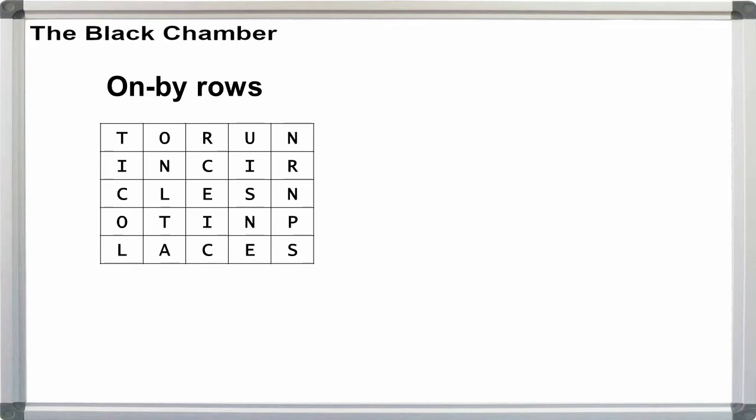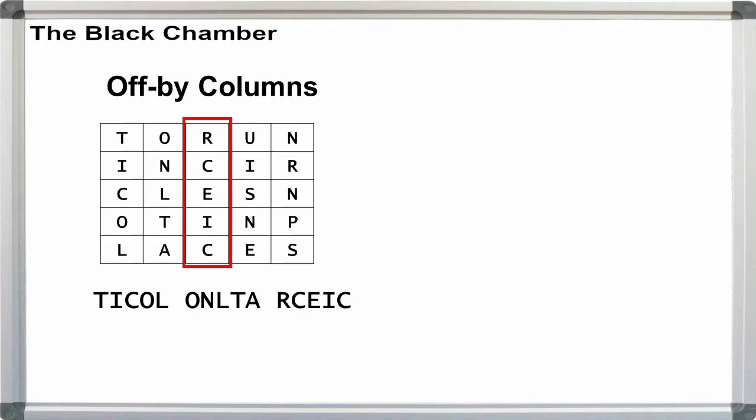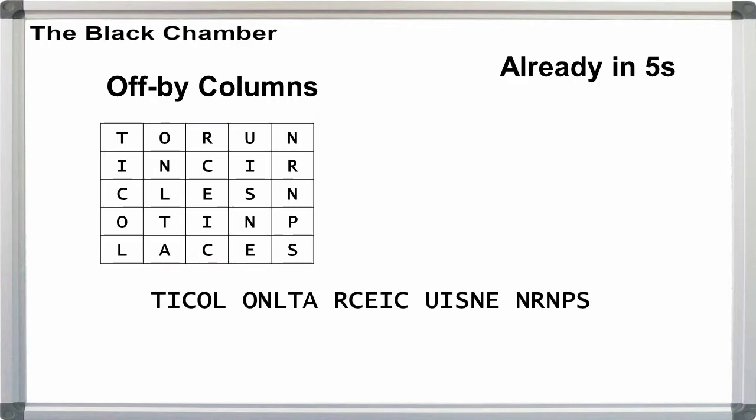To start simple, let's take the on-by-rows example and use an off-by-columns route. Group in fives, and we're done.